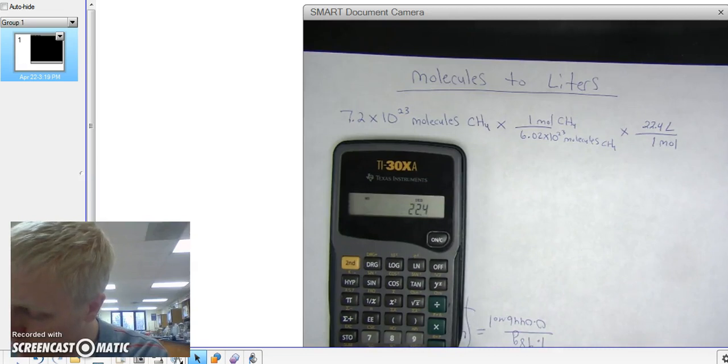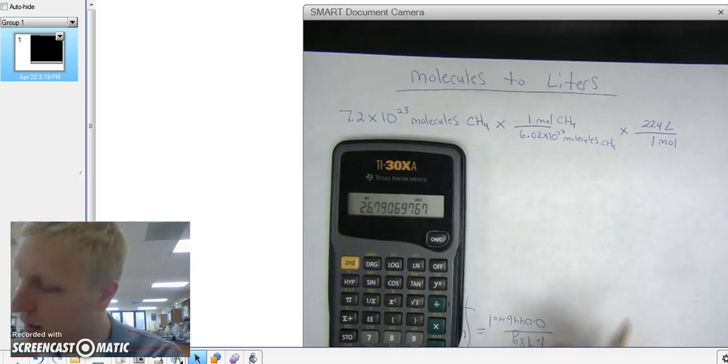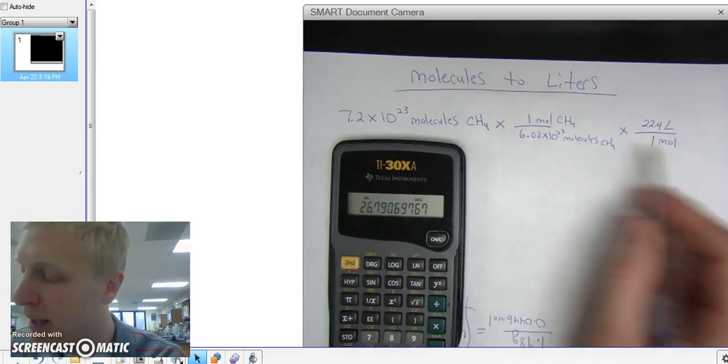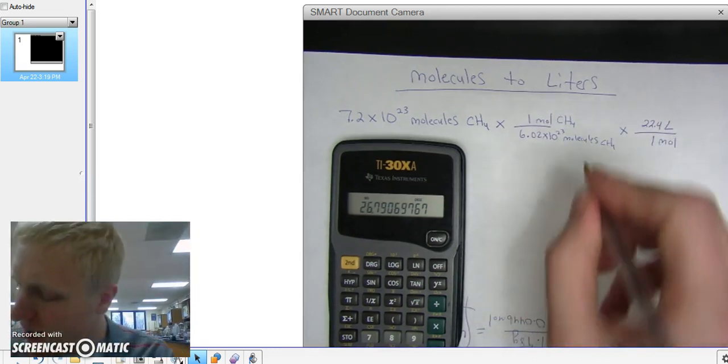Times 22.4 over 1. Basically, I'm multiplying all of my top numbers.